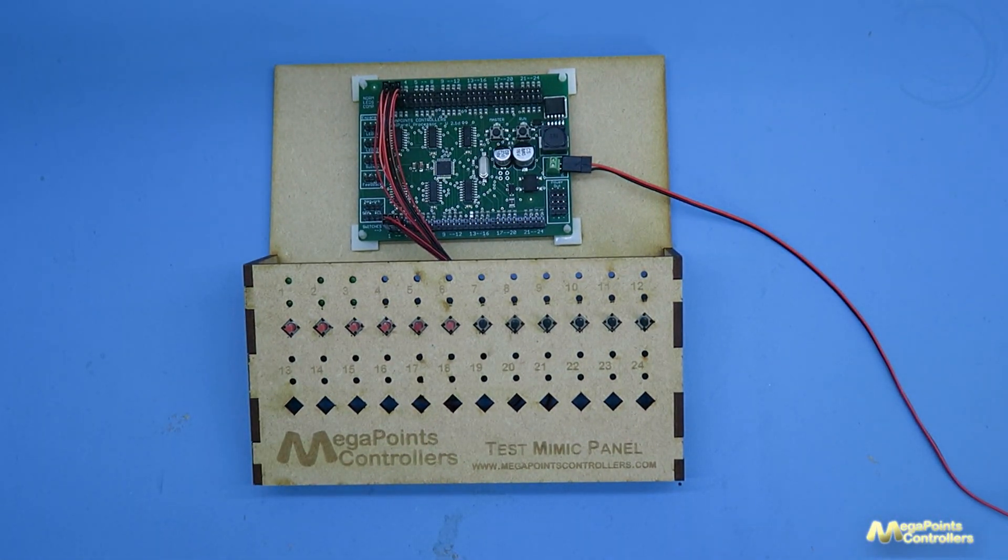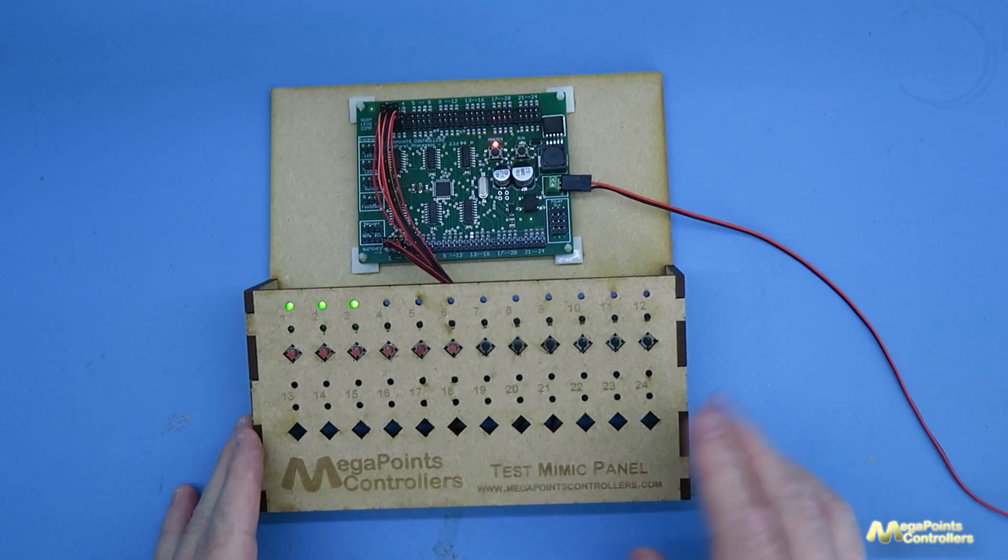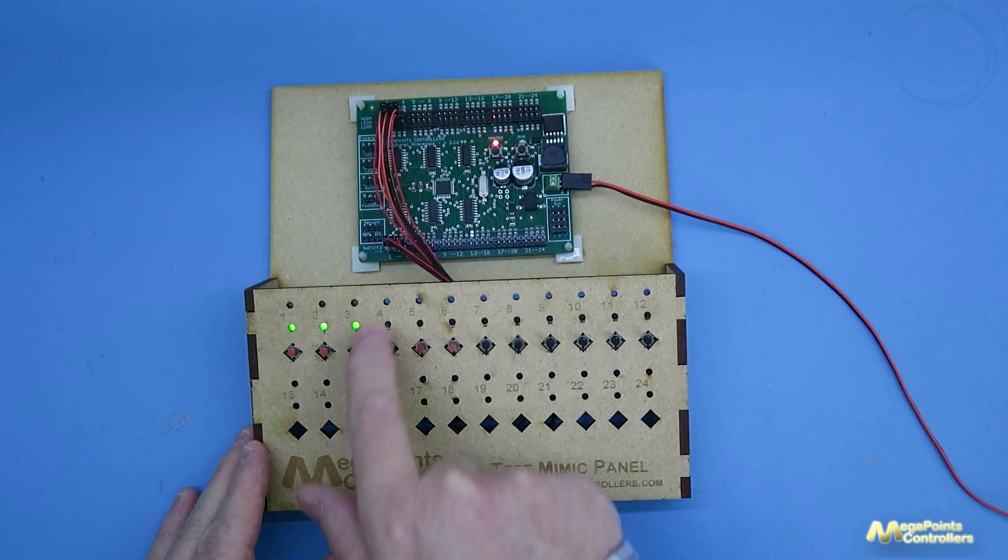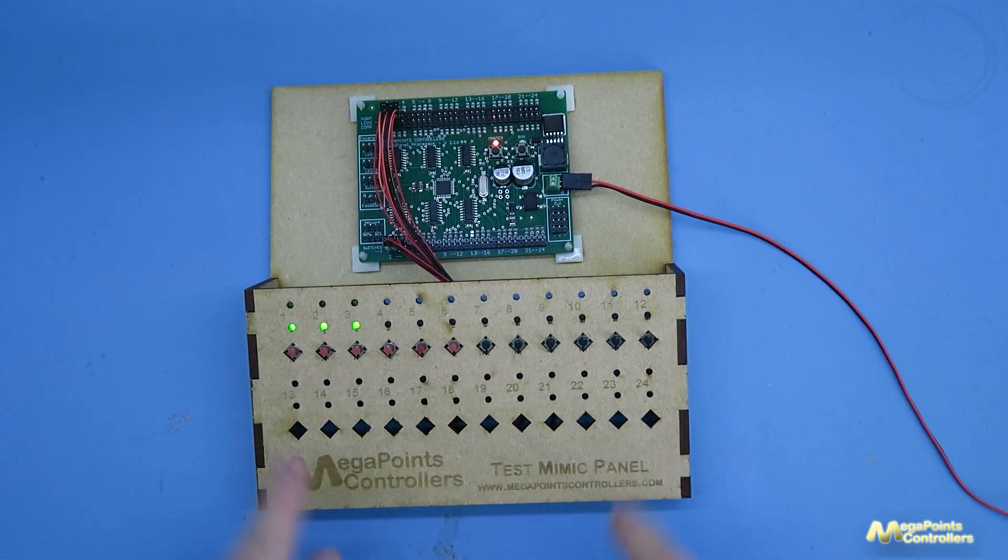So if I power up the multi-panel you can see that I've got some buttons here and some lights. So I've installed pairs of lights per channel and they're numbered 1 to 24.